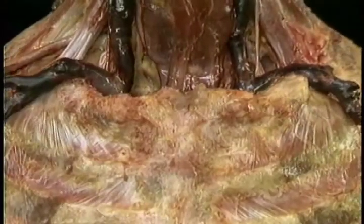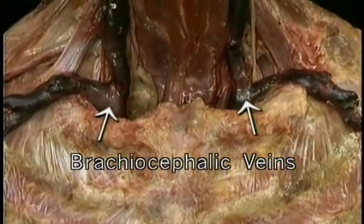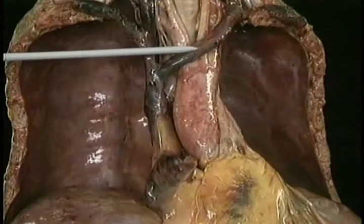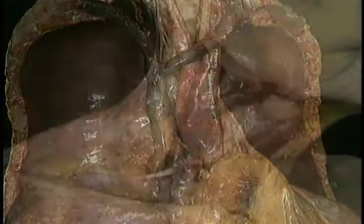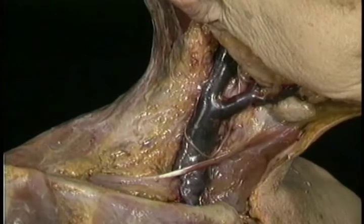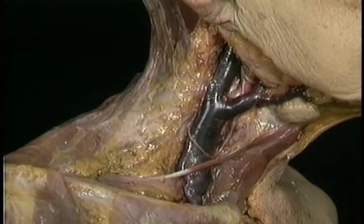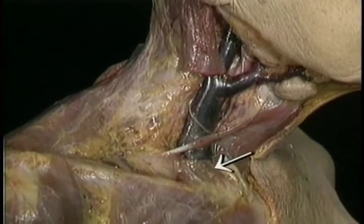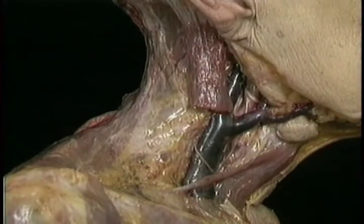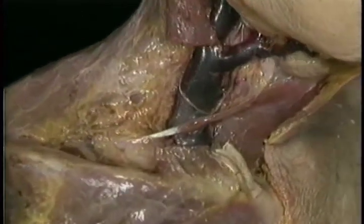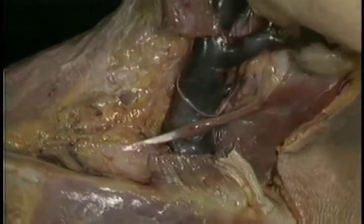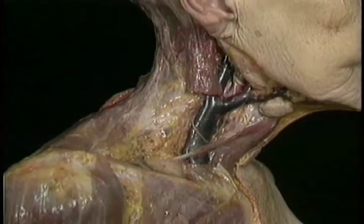The two brachiocephalic veins pass through the superior thoracic aperture, and in the thorax they join to form the superior vena cava. The internal jugular vein is covered by the sternocleidomastoid muscle. Above, the vein lies slightly in front of the sternocleidomastoid muscle; below, it lies just lateral to the interval between the sternal and clavicular insertions of the muscle.